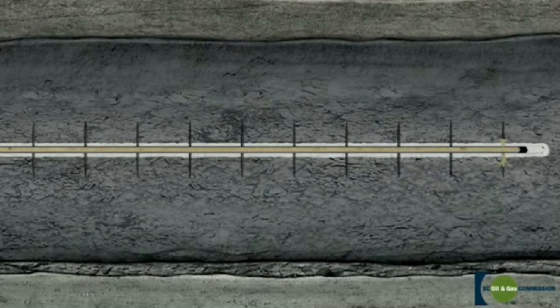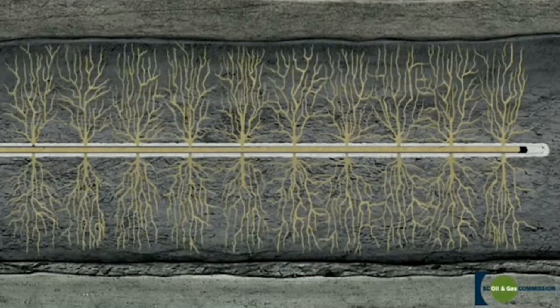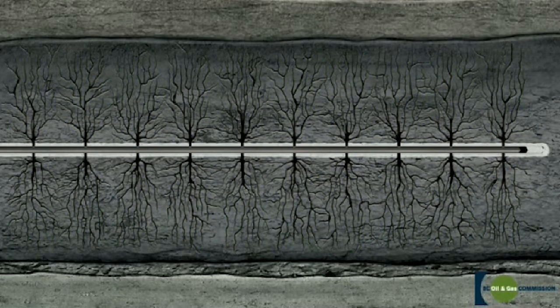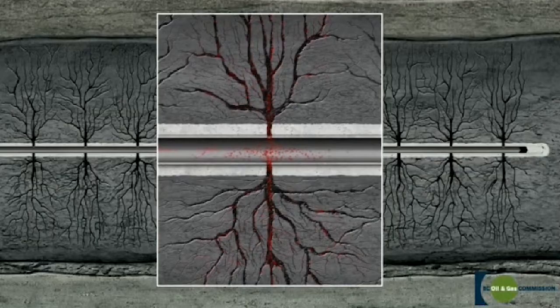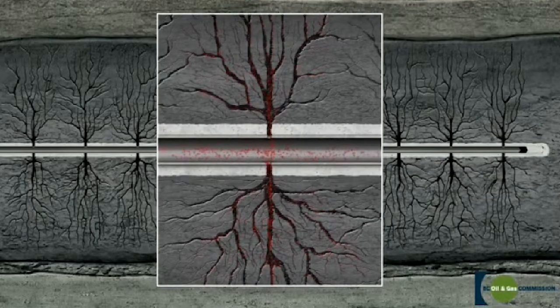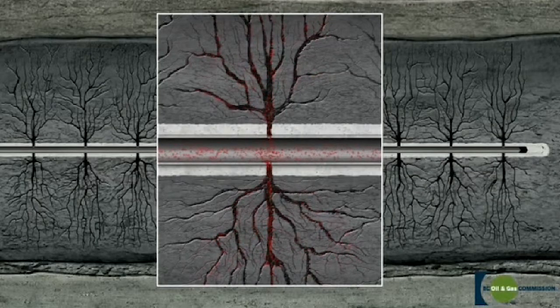As the mixture is forced out through the perforations and into the surrounding rock, the pressure causes the shale to fracture. This creates a fairway connecting the reservoir to the well and allows the released gas to flow to the wellbore.